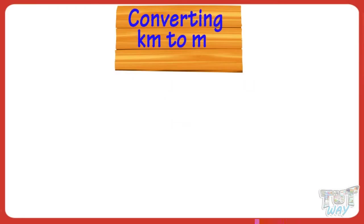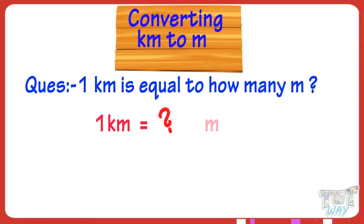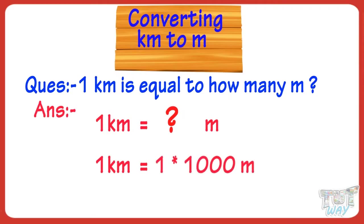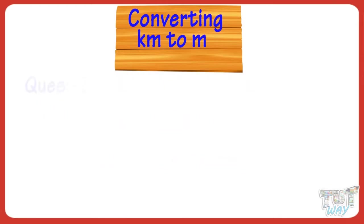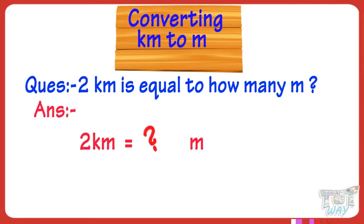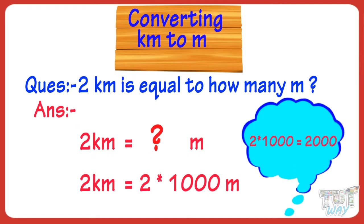Now let's learn converting kilometers to meters. 1 kilometer is equal to how many meters? 1 kilometer equals 1 multiplied by 1,000 meters — that is, we multiply by 1,000. So 1 kilometer equals 1,000 meters. 2 kilometers equals how many meters? Multiplying 2 by 1,000, we get 2,000. So 2 kilometers equals 2,000 meters.